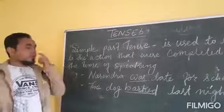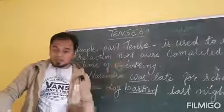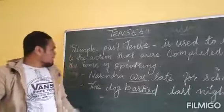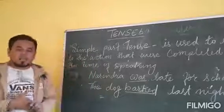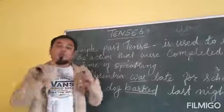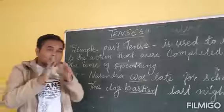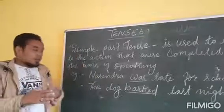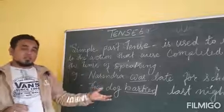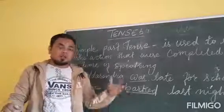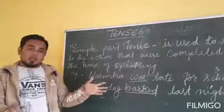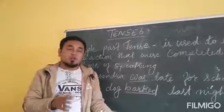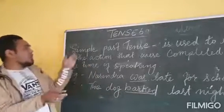Let us understand what simple past tense is. Simple past tense is used to refer to an action that was completed before the time of speaking — an action that has already completed. It refers to actions that happened in the past, such as last month, yesterday, last time, or in the morning. All such actions that happened or just happened in the past refer to simple past tense.